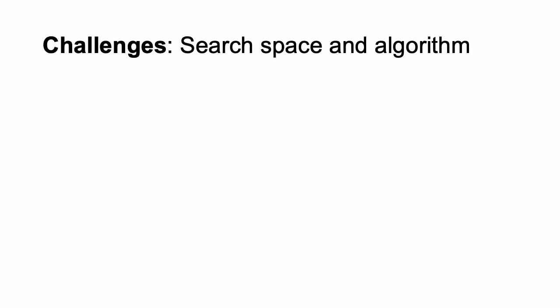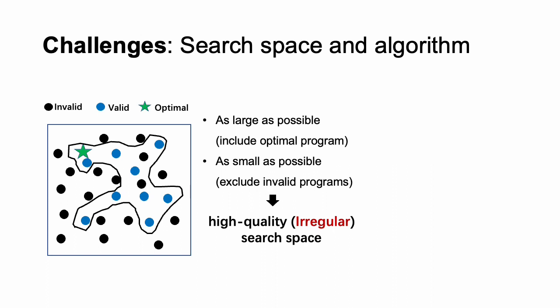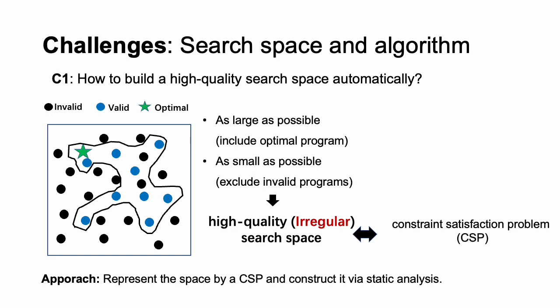The challenges of high-performance code generation for DLAs are from search space and algorithm. For the search space, it has to be as large as possible to include optimal programs. However, the search space also has to be as small as possible to exclude invalid programs. The resultant search space is high-quality but highly irregular. So the first challenge is how do we build such a high-quality but irregular search space automatically? Our approach is to describe the search space as a constraint satisfaction problem and construct the CSP via static analysis.